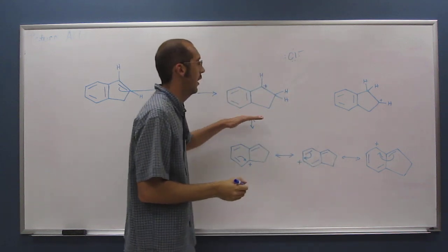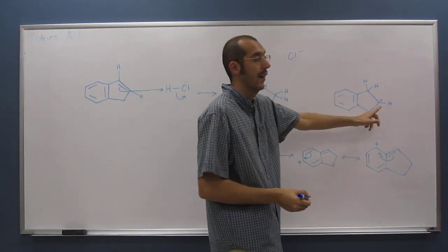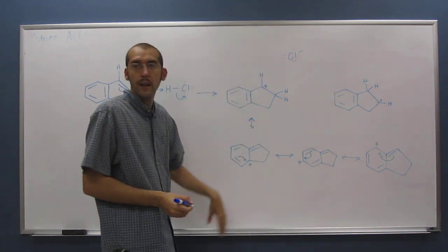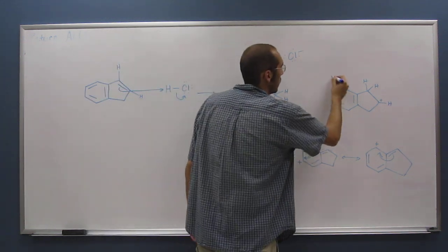So we essentially make this carbocation exclusively over this one, even though they're both secondary. But it's because this one has so many resonance structures. And then of course, what's going to happen, so this one's not made.